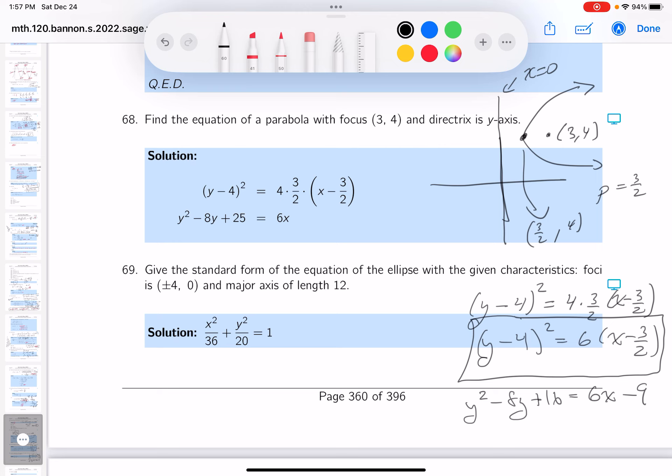So if you want to, you can write it down as y squared minus 8y. Let's take a look at that. I'm going to add 9 to both sides, so plus 25 equals 6x.